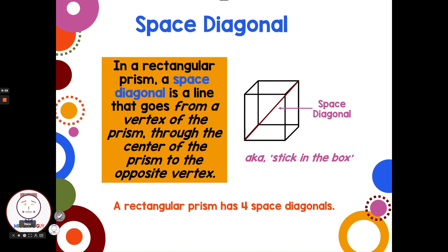If we just took a prism like a cube and put a line from a vertex, in a regular prism a space diagonal is a line that goes from the vertex of the prism through the center of the prism to the opposite vertex. If you think of it like if you took a square box and you put a yardstick and stuck the yardstick into one corner and laid it through, so it ran through the middle of the box and ended up at the top of the box. Some math teachers will call that stick in the box.